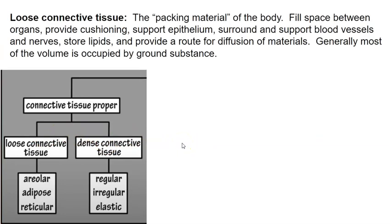Loose connective tissue is the packing material of the body — the stuff that fills the spaces between organs, provides cushion, supports the epithelium, supports and surrounds blood vessels and nerves, provides for lipid storage, and provides a route for diffusion of materials. Since epithelium has no blood vessels, connective tissue provides support in that sense. Generally, most of the volume is occupied by ground substance.